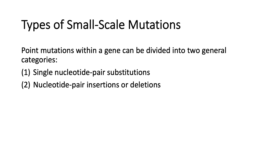Let's now consider how small-scale mutations affect proteins. Point mutations within a gene can be divided into two general categories: first, single nucleotide pair substitutions, and second, nucleotide pair insertions or deletions. Insertions and deletions can involve one or more nucleotide pairs.